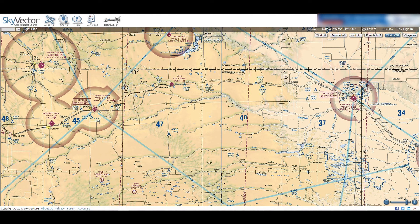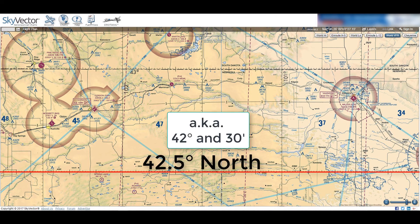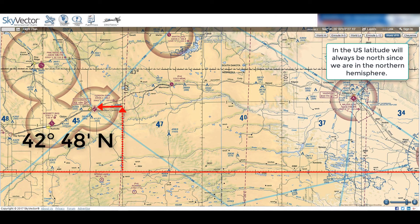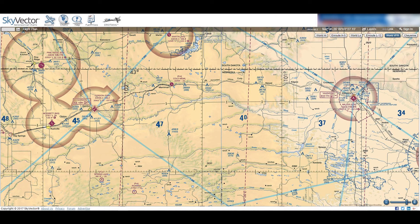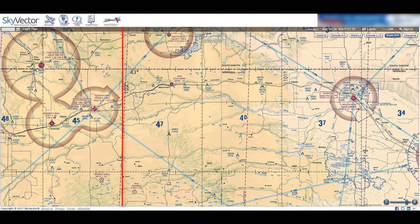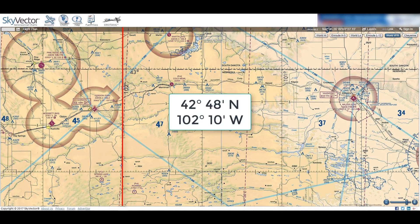Now, let's find the coordinates for Gordon Airport. First, let's find out how far north it is. We will start by counting up from this line of latitude, which is 42.5 degrees. We know this because the next line up is 43 degrees. So we will start counting from 30 minutes. This means that the latitude is 42 degrees and 48 minutes north. Next, let's find out how far west it is. We will start counting from the 102-degree line. That puts it at 102 degrees and 10 minutes west. So the coordinates for Gordon Airport are 42 degrees, 48 minutes north, by 102 degrees, 10 minutes west.